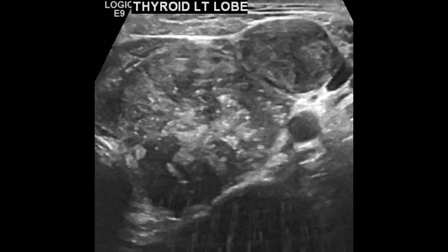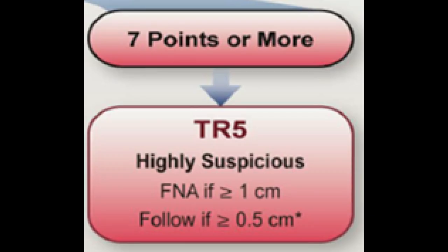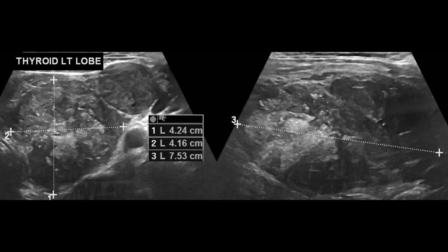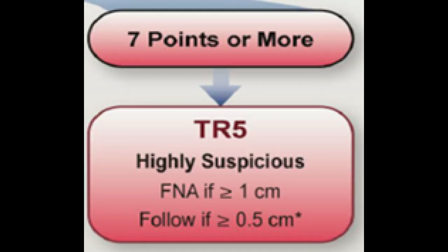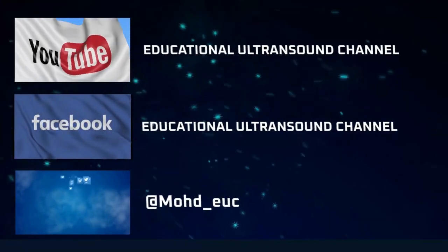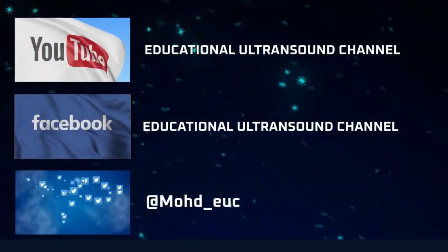The nodule also has macrocalcification with acoustic shadowing, so we give it one additional point. The total for echogenic foci is four points. Adding all points together gives us a score greater than seven, corresponding to TI-RADS 5. Since the maximum diameter is 7.5 cm, which is greater than one centimeter, this nodule is indicated for FNA. This is a highly suspicious nodule corresponding to TI-RADS 5.